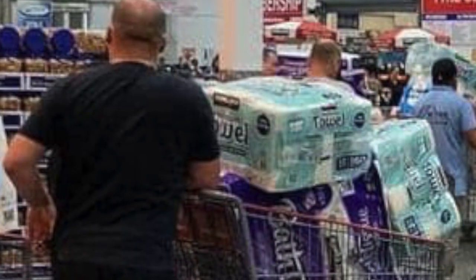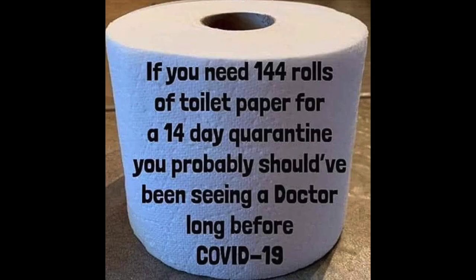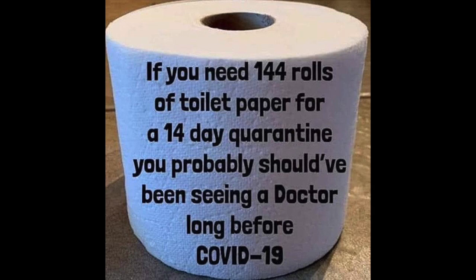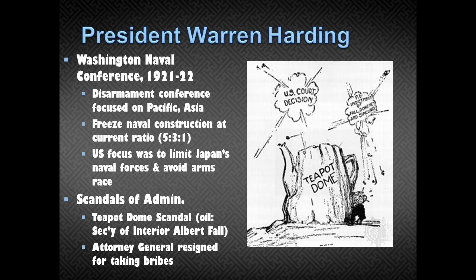You see people hoarding supplies — buying all the toilet paper and hand sanitizer — and that's kind of how the United States felt during the Great Depression: we just need to take care of ourselves. Now, the US did do some things on the international front, but those actions were more about making themselves more isolated. The first big one is the Washington Naval Conference, where the United States actually reduced the amount of weapons worldwide to lower the probability of war.